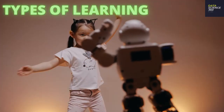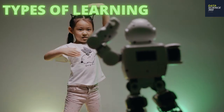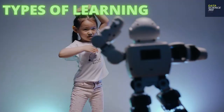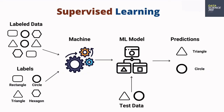Based on how we train a model and the data available, there are different types of learning. Supervised learning. It is a way of teaching the algorithm by giving it a lot of labeled data. During its training phase, the system is fed with labeled datasets, which instruct the system what output is related to each specific input value. The trained model is then presented with new data so it can make predictions.